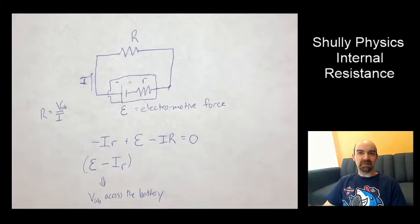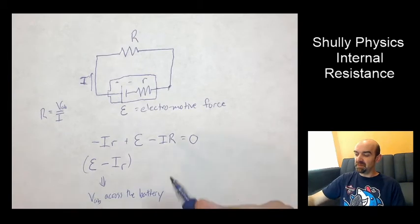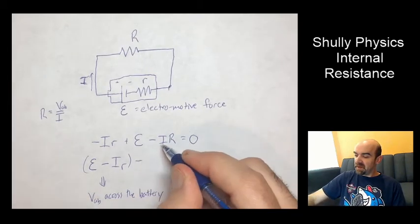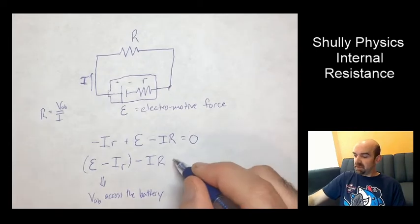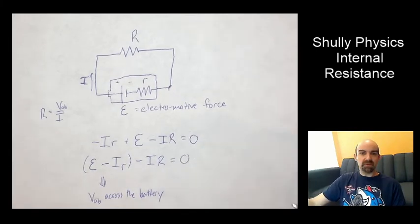So that's our VAB potential difference across the battery. Now technically I haven't specified what point A and point B is, so I'm just using this as a general term, VAB. And then we'd have the minus I R, so there's the potential from the load, equals zero.